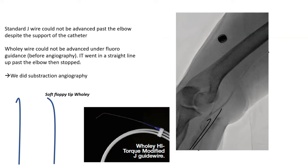This is a patient on whom I could not advance a J-wire past the elbow. I tried a woolly wire. The woolly wire went a little bit higher up, but it got stuck there. So at this point I did subtraction angiography, and this is what we found.